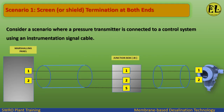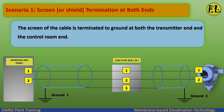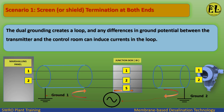Scenario 1: Screen or shield termination at both ends. Consider a scenario where a pressure transmitter is connected to a control system using an instrumentation signal cable. The screen of the cable is terminated to ground at both the transmitter end and the control room end. This dual grounding creates a loop, and any differences in ground potential between the transmitter and the control room can induce currents in the loop.